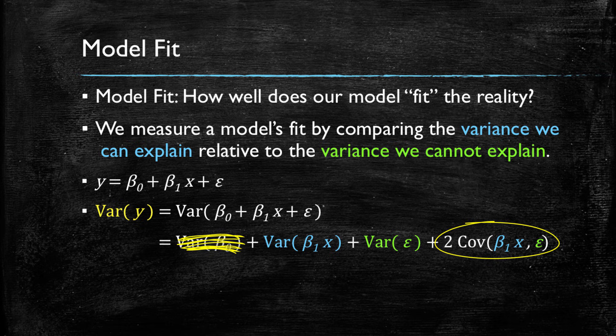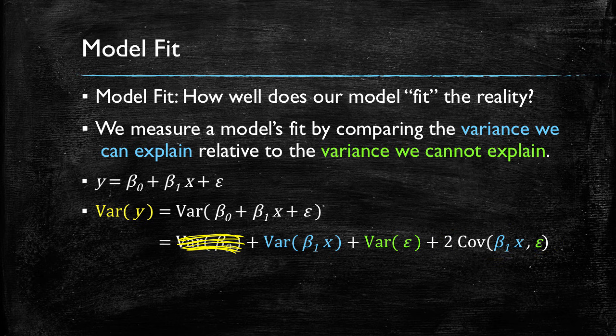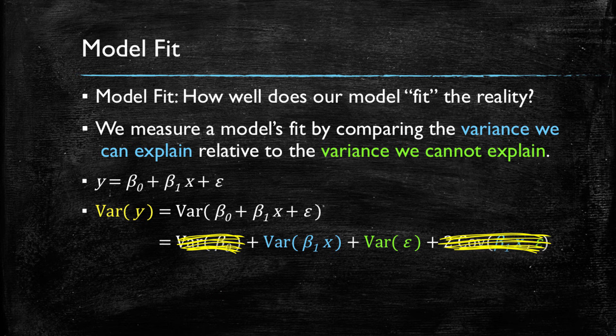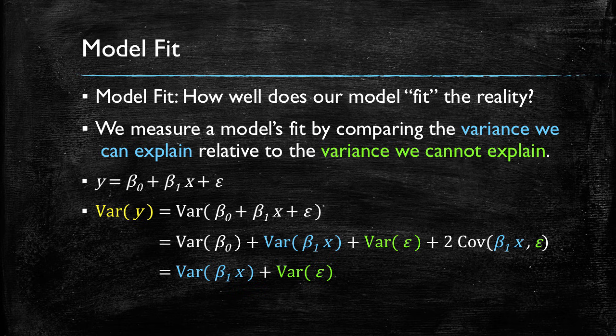And in fact, we will see later how if there is some correlation between these two, our estimates from the regression are going to be biased. But we will assume for now that this term is also zero because what we can explain and what we cannot explain are not correlated. So that term cancels out and we are left with a very simple expression of the variance of beta times X plus the variance of the error term.